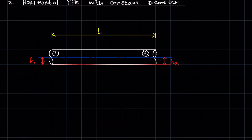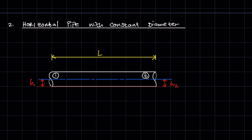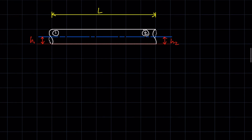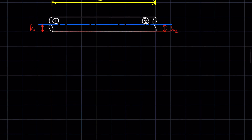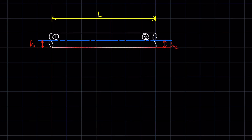Hence we account for the average velocity of the water in the pipe. Now, to find the frictional head loss for a problem where you have a horizontal pipe with a constant diameter, you apply Bernoulli's between point one and point two. Taking into consideration that for a horizontal pipe, the potential energy terms tend to be the same and hence cancel.